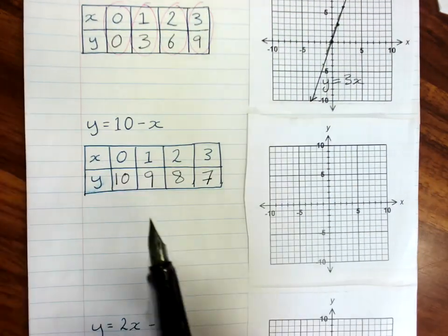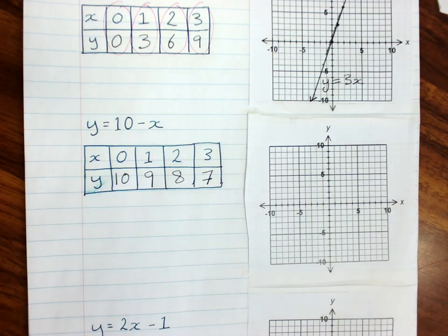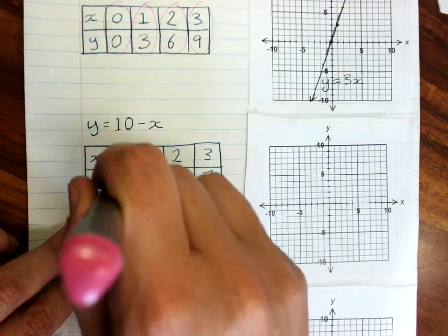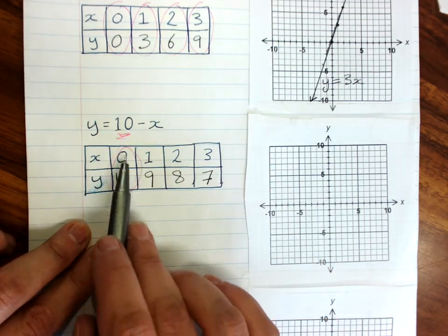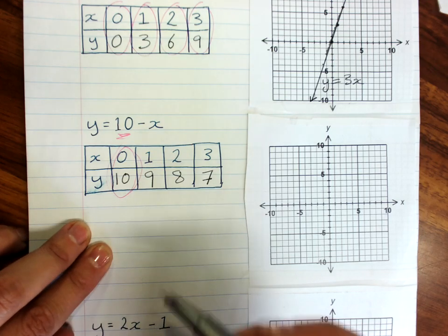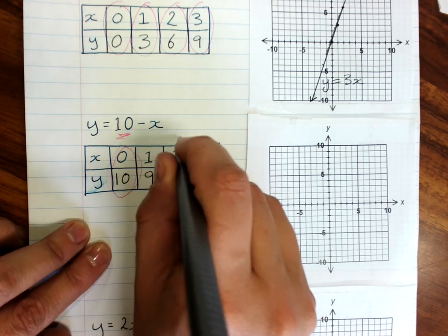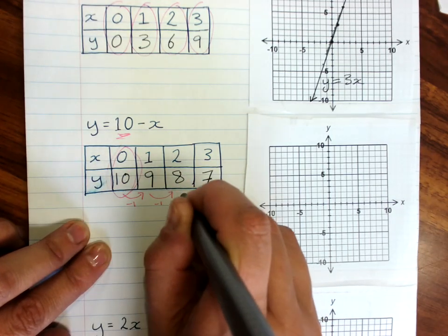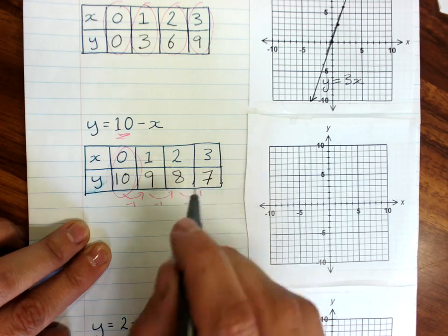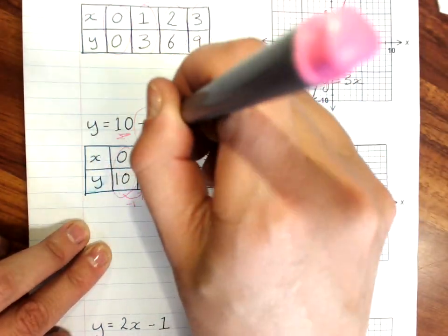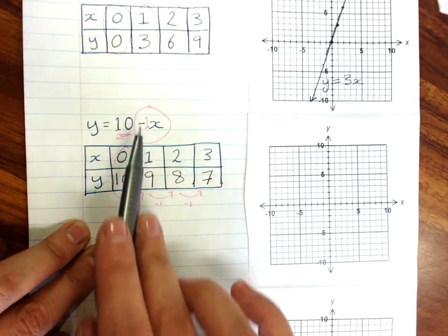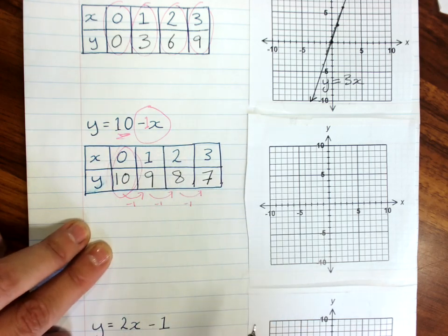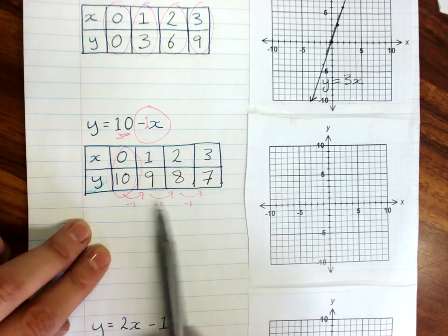Now you can actually see, if you start at 0, the number that's on its own in the rule, in this case 10, is going to be the y value. And then, as x goes up by 1, have a look at what happens to the y. This is dropping by 1. The number in front of the x, in this case minus 1, is how much the y changes by every time x goes up by 1. So this is a useful little thing that you can have a look at.